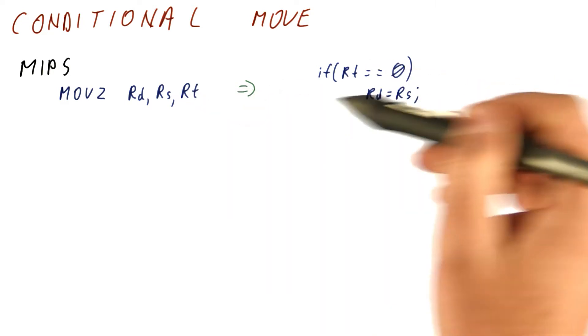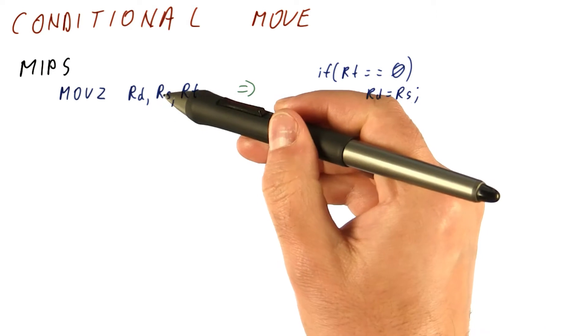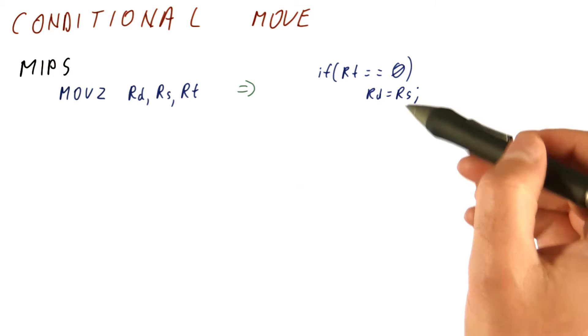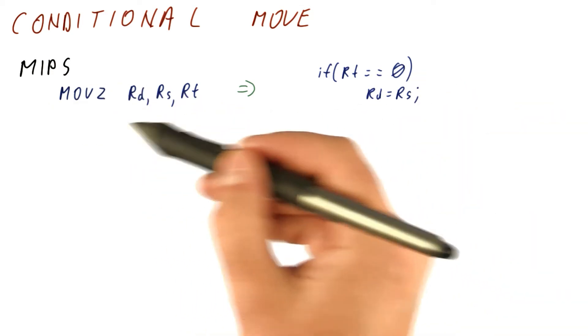And the way this works is that this instruction compares RT to zero. And if it is zero, then changes RD to become equal to RS. Otherwise, leaves RD alone. Note that there is no branch here anymore because this is a single instruction.